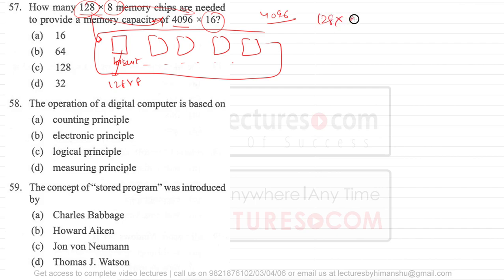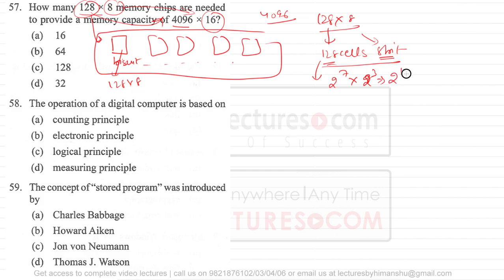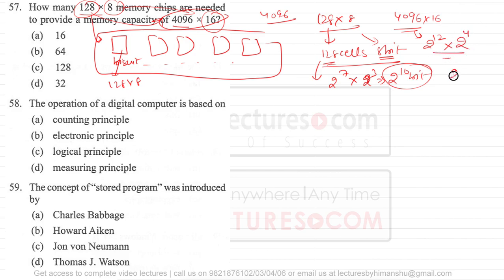A 128×8 chip means 128 cells, each storing 8 bits. So 128 is 2 raised to power 7, multiplied by 8 bits which is 2 raised to power 3 — giving 2 raised to power 10 bits per chip. For 4096×16: 4096 is 2 raised to power 12, and 16 is 2 raised to power 4, so this is 2 raised to power 16 bits total.